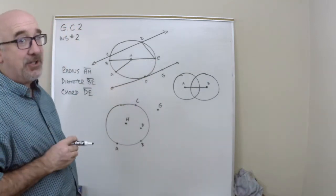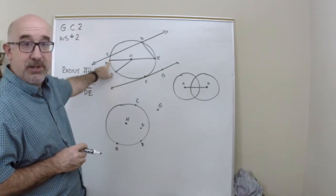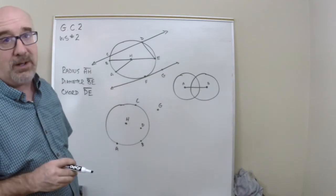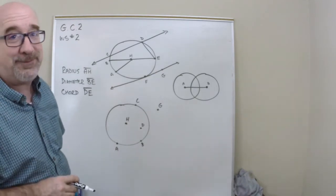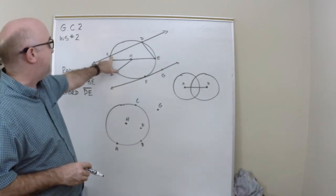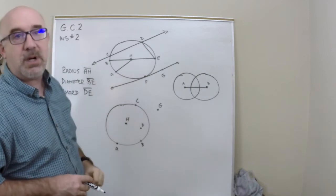Using that definition, I need to tell you that a diameter, because B is on the circle, E is on the circle, is a chord as well. It's the longest chord, don't forget that. So, there are chords. Actually, starting at C and going to D is also a chord.